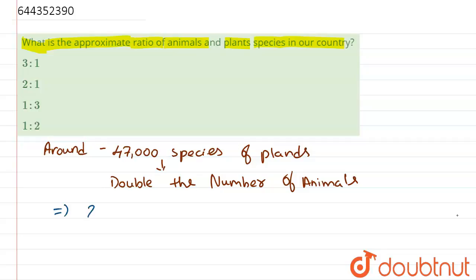Around 81,000 species of animals have been recorded in India. Okay, so the ratio of animals and plants in India becomes 2 is to 1, the correct answer.